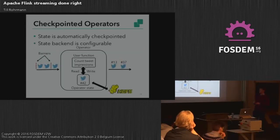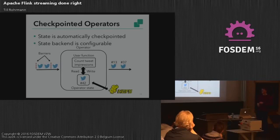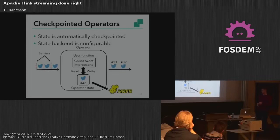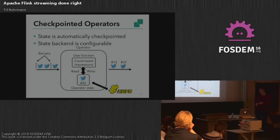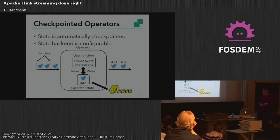What does checkpointing mean for our stateful mapper? By enabling the checkpointing mechanism, the system inserts barriers into the input stream. Whenever the operator sees a barrier, it takes the current count value and writes it to a state backend — in this case HDFS. The state backend is configurable: currently Flink supports file systems like HDFS, a memory state backend, and a RocksDB state backend is in progress. For your user function, this is completely transparent — you don't have to bother about what's happening behind the scenes.